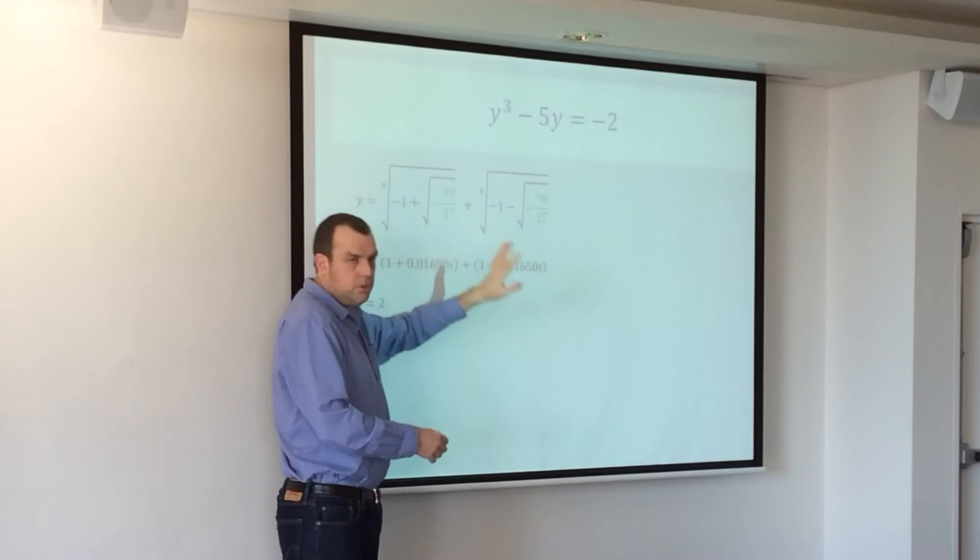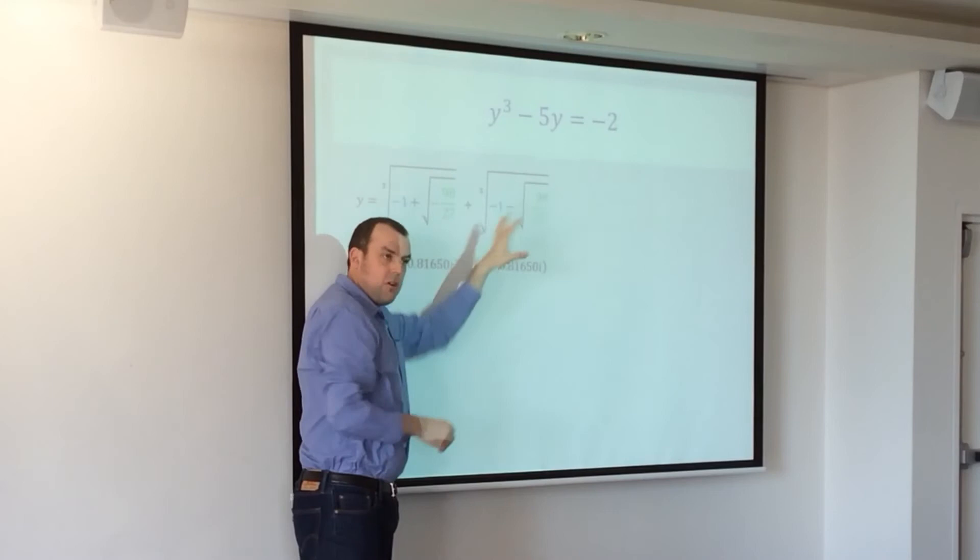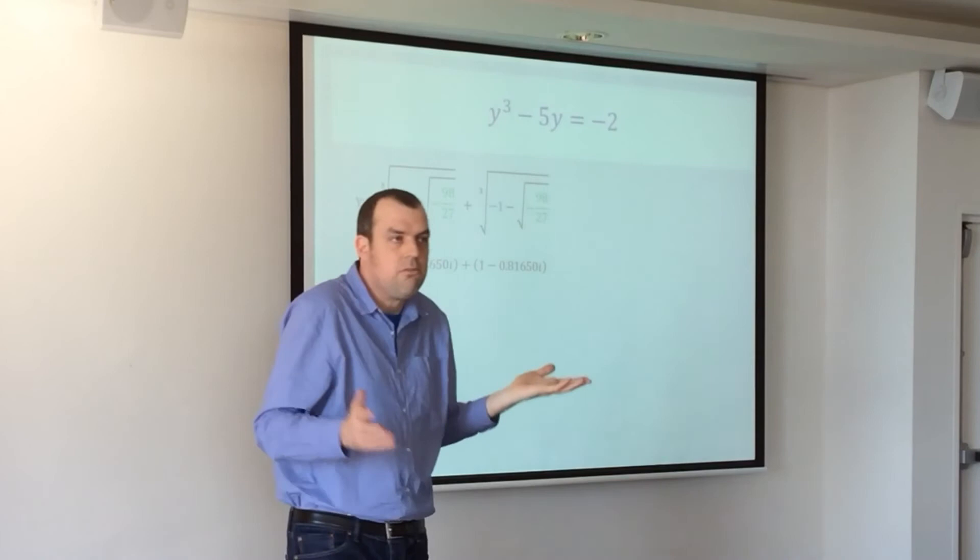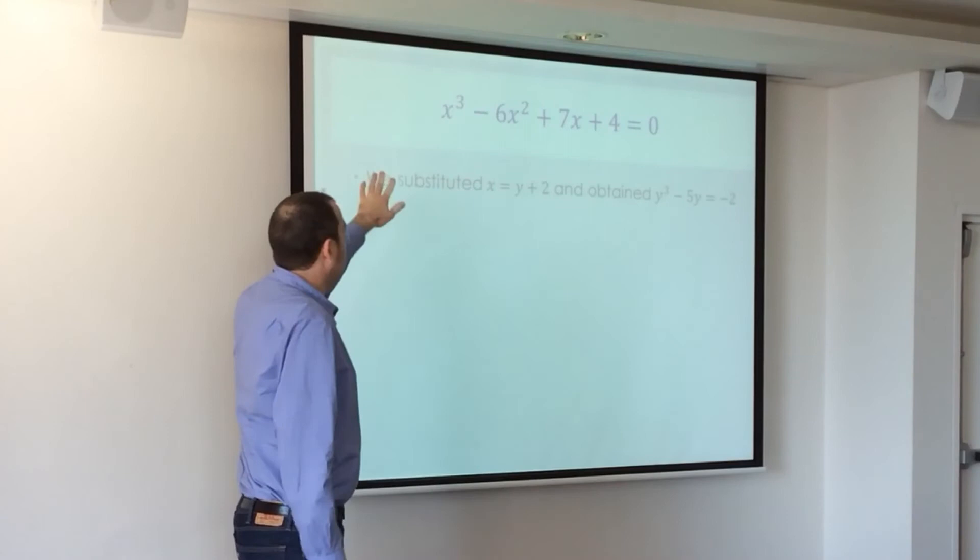But there are other cube roots, and I believe, but don't quote me, that if you take various complex cube roots of those and combine them in different ways, you'll get the three solutions. That makes sense. Right?